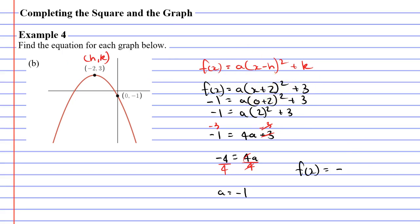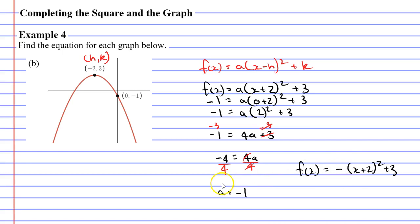So f(x) equals — in place of A we have negative 1, but rather than writing negative 1 I'm just going to put the negative symbol — negative (x plus 2) squared plus 3. Why just the negative symbol and not negative 1? Well, when you see the negative symbol next to a set of brackets, it technically means negative 1, but we don't write the 1 down.